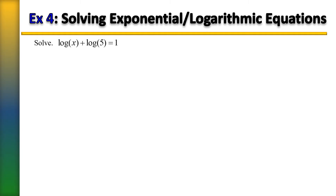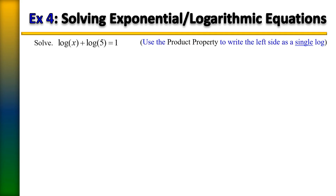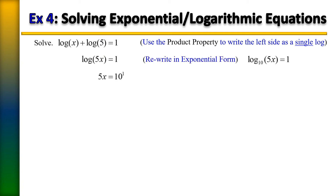Number 4: the common log of x plus the common log of 5 equals 1. We begin by rewriting the left side as a single log. Since both logs have the same common base, we use the product property of logarithms, giving us the common log of 5x equals 1. Rewriting in exponential form: 10 raised to the 1st power equals 5x. Dividing by 5, x equals 2.